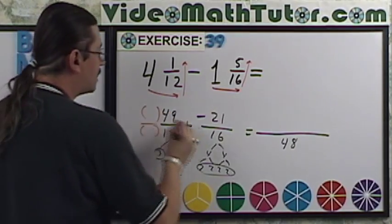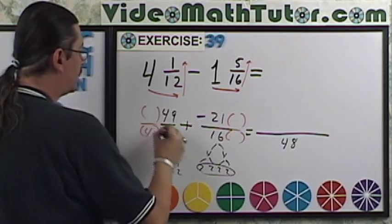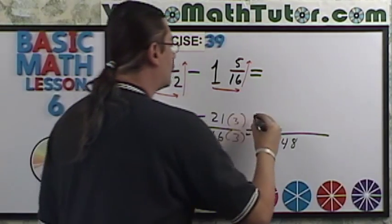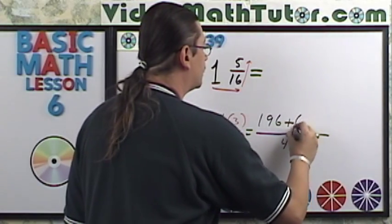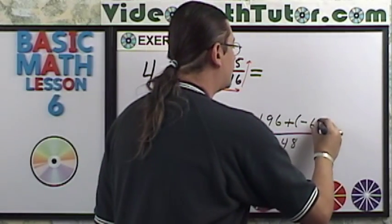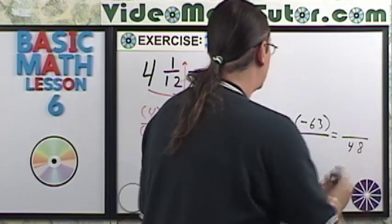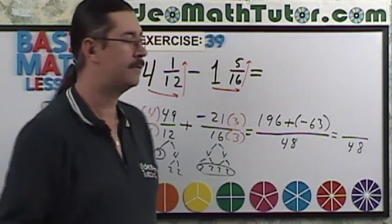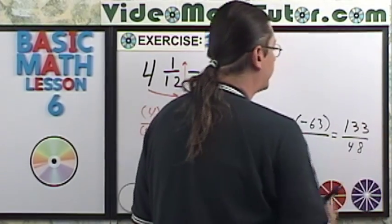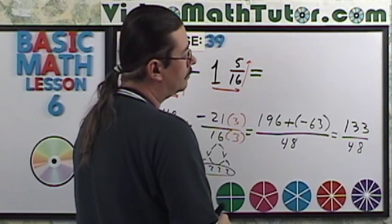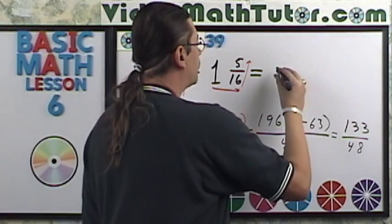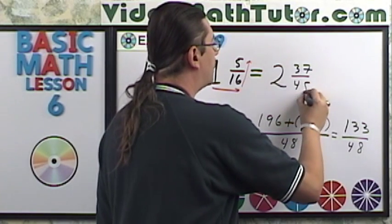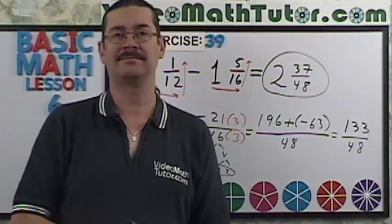Now I need to multiply this by something and this by something. Well, 4 times 12 is 48, 3 times 16 is 48. 4 times 49 is 196 plus negative, 21 times 3 is 63. Now you have 196 plus negative 63, or you can think of this as just 196 minus 63, it doesn't make a difference. So you're going to get 133. We need to reduce that. Well, you can just use long division again and you're going to get 2 as an answer. And what's the remainder going to be? 37 out of 48. This was a little bit tougher, but I hope you did it right.